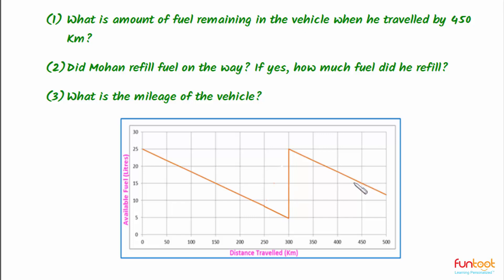For the first part, we have to find the amount of fuel remaining when the vehicle has traveled 450 kilometers. For a point on the graph, the x-coordinate is given as 450 kilometers, so we can easily find the y-coordinate — that is, the amount of fuel left in the vehicle.